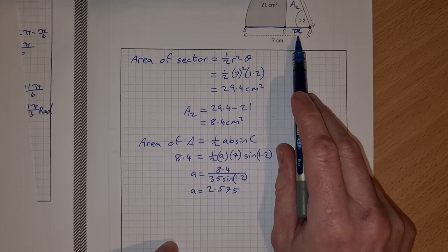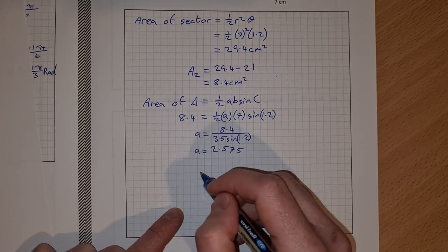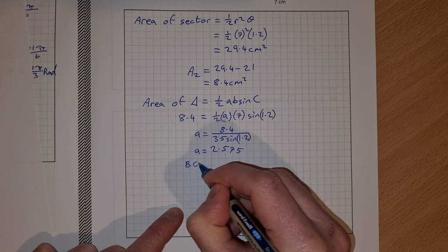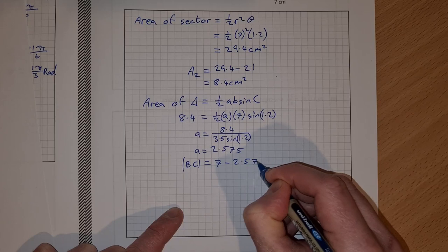We're not looking for this A. We're looking for this one here. So it's going to be 7 minus that. So BC is equal to 7 minus 2.575.